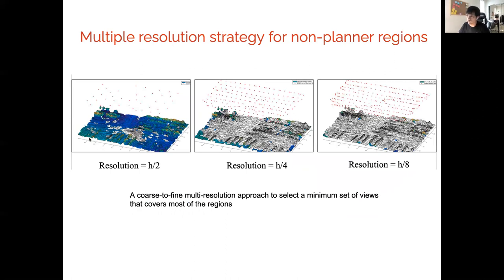Initially, for a triangular mesh, we select a camera grid with resolution h divided by 2. That's a sparse set of views which covers the white regions. Then we increase the resolution to h divided by 4, and thus we have more cameras covering more regions. At last, we have h divided by 8, which has a lot more cameras. Using this coarse-to-fine multi-resolution approach, we can select a small set of views that covers most of these regions.